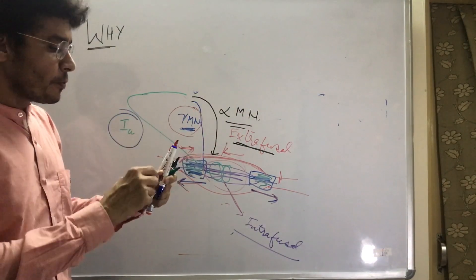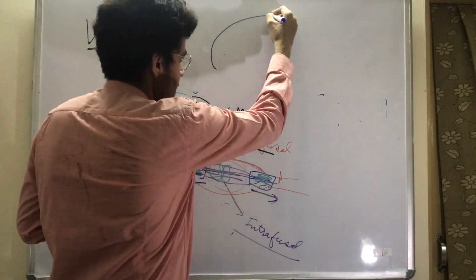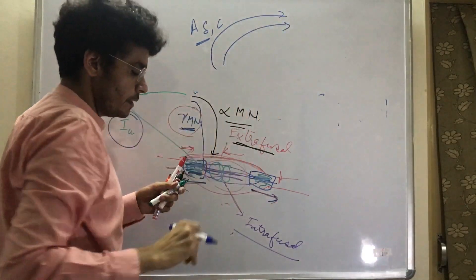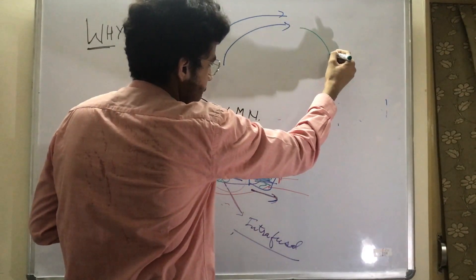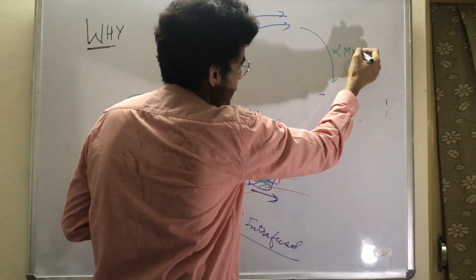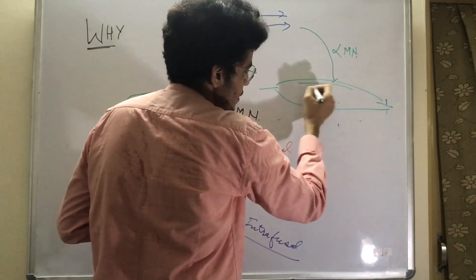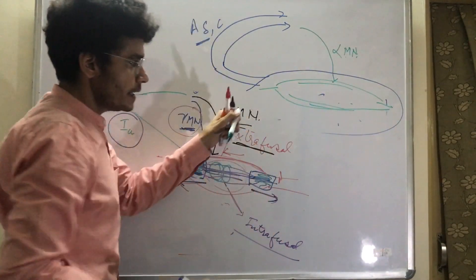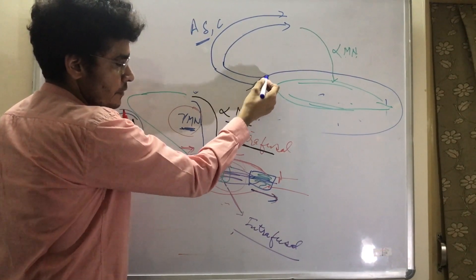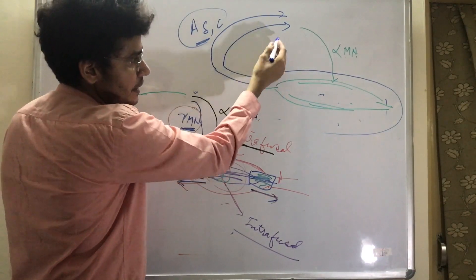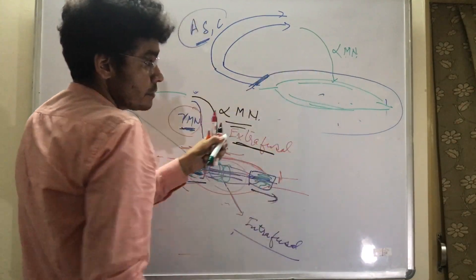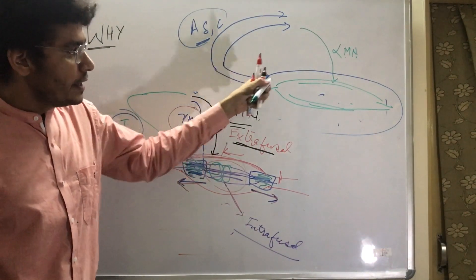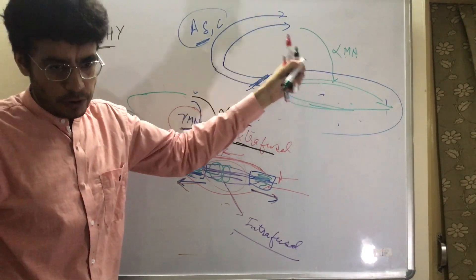In the superficial reflex, pain and temperature sensation is carried via A-delta and C fibers to the spinal cord, where they synapse directly with the alpha motor neuron. The alpha motor neuron then innervates the extrafusal fiber, causing the muscle to contract and producing withdrawal of the hand. There is no contribution by the gamma motor neuron in this pathway.